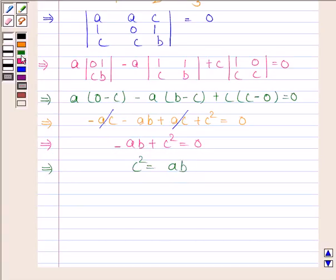Hence, we prove that if vectors a1, a2, and a3 are coplanar, then c squared equals ab. This completes the session. Bye and take care.